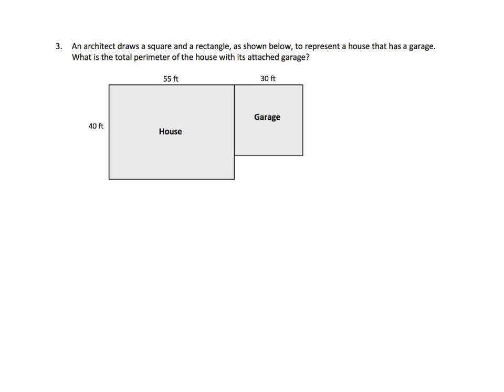This is a fun one. It says an architect draws a square and a rectangle to represent a house that has a garage. What is the total perimeter of the house with its attached garage? So basically what they're asking is for us to find the distance around this entire house shape — this side, plus this, plus this, plus this, plus this, plus this.